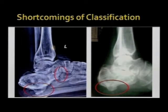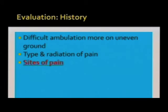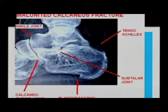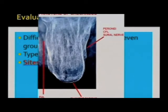Calcaneo-cuboid arthritis or a plantar bump is not covered in this classification. In history, the most common complaint is difficult ambulation, more so on uneven ground. The site of pain tells you about the problems: pain could be from tendo-Achilles pressure, the subtalar joint, fat pad, CC joint, ankle joint, peronei, calcaneofibular ligament, sural nerve, FHL, or the tibialis posterior nerve. You need to evaluate each of these.